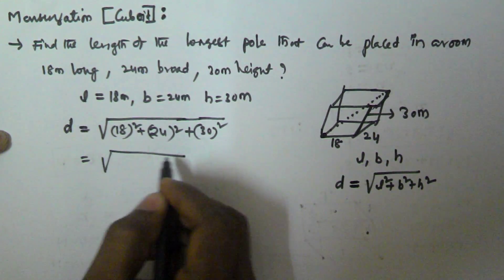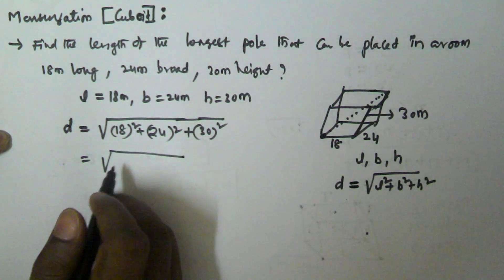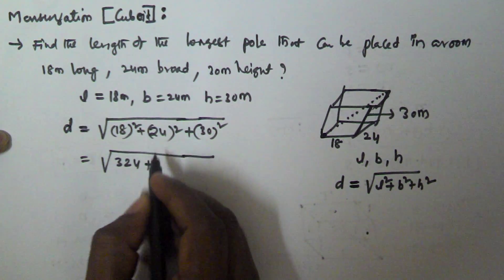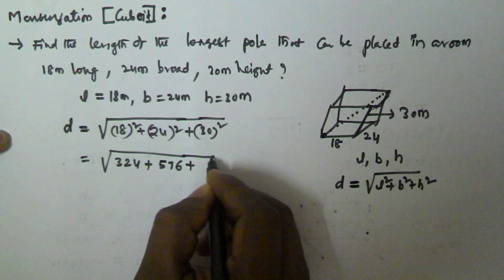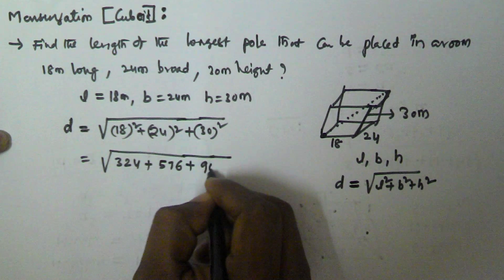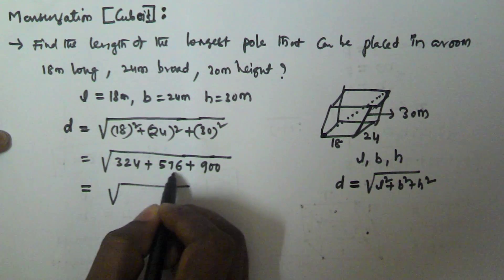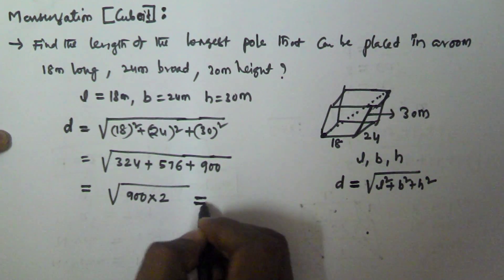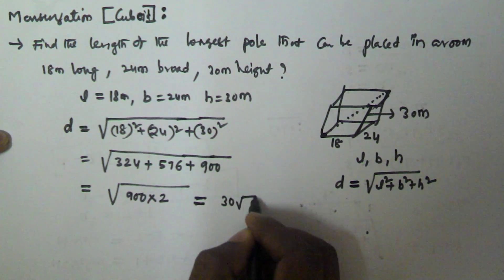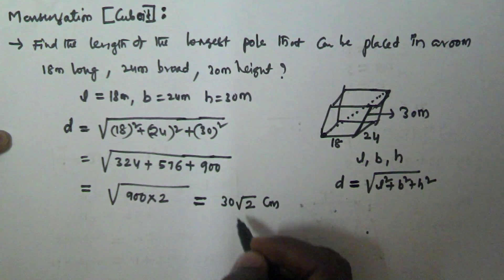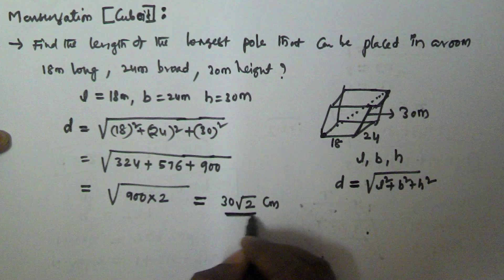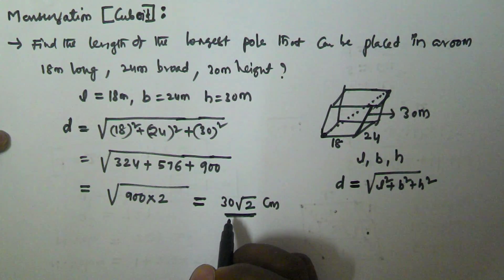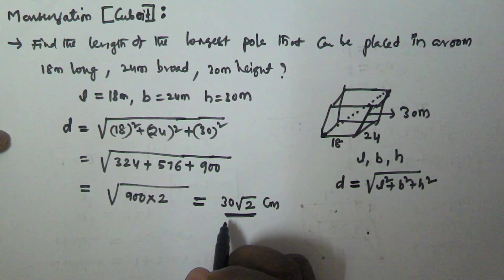18² = 324, 24² = 576, and 30² = 900. So that is equal to 324 + 576 = 900, and 900 + 900 = 1800. The square root of 1800 = 30√2 meter. So this is the length of the longest pool that can fit into a room whose length is 18 meters, breadth is 24 meters, and height is 30 meters.